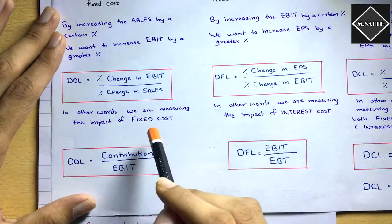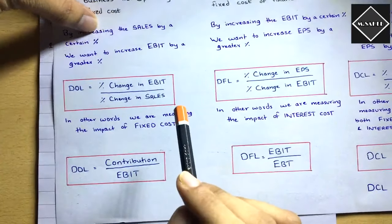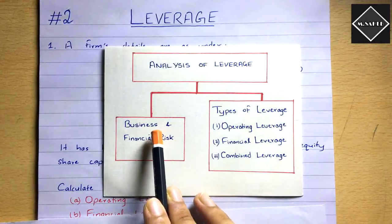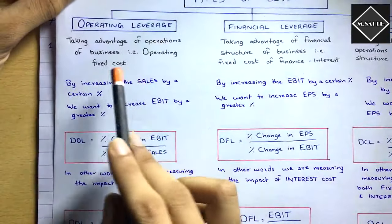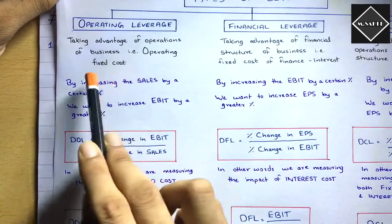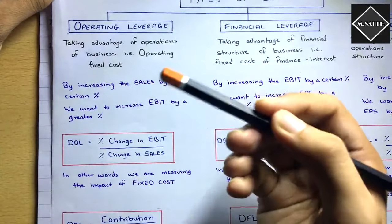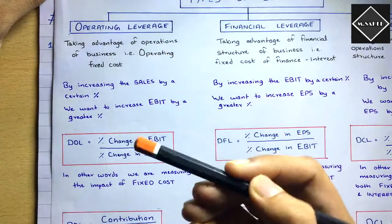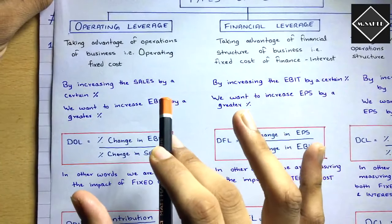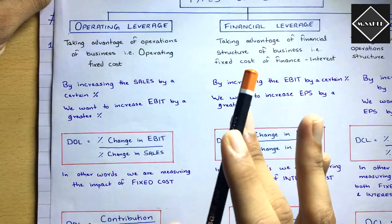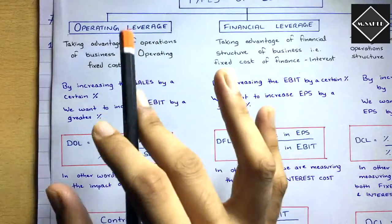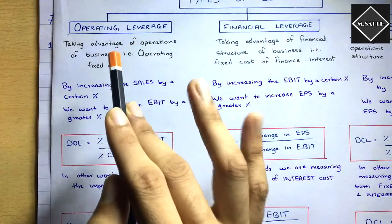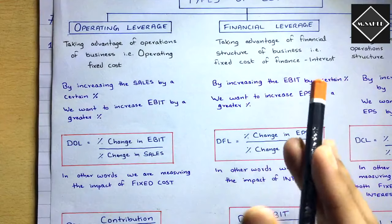Operating leverage measures the impact of operating fixed cost, and it signifies business risk. If operating leverage is more, it means fixed cost is more. The business has to do more and more sales to cover that fixed cost; otherwise their business will be closed down. It can also be an advantage — if sales increases by a certain percentage, due to fixed cost, EBIT will increase disproportionately, by a greater percentage.